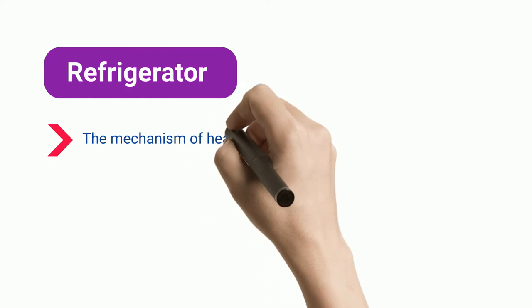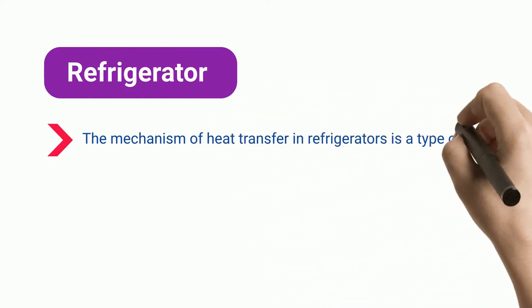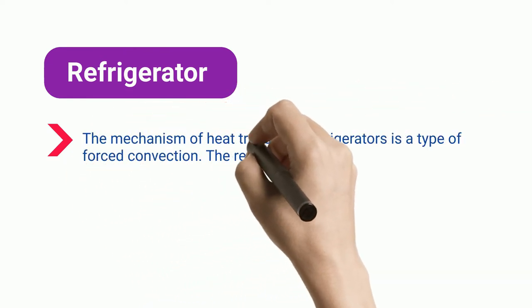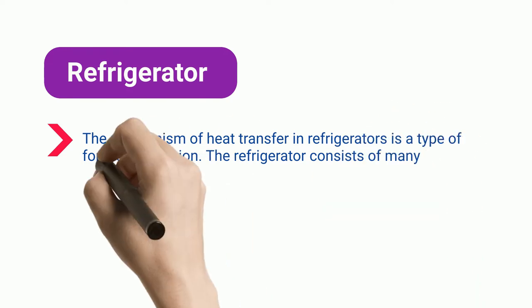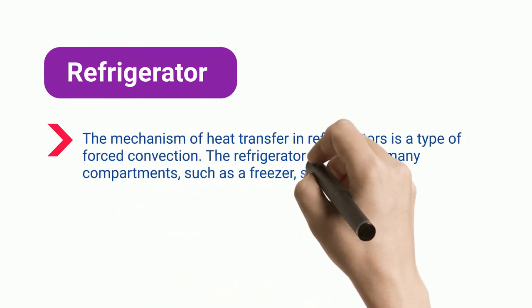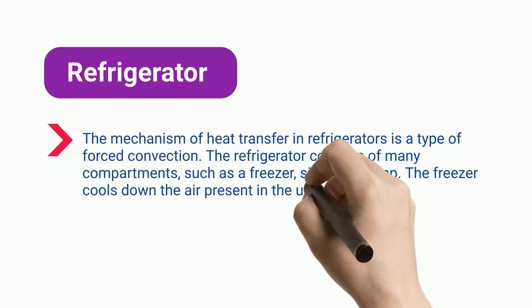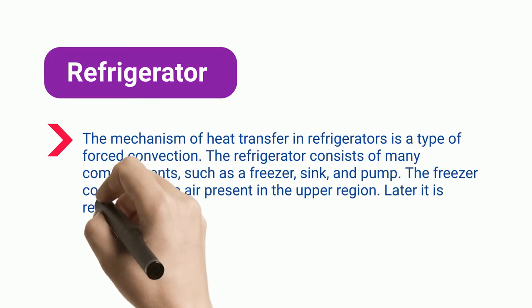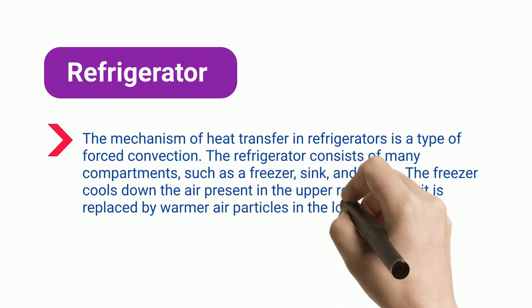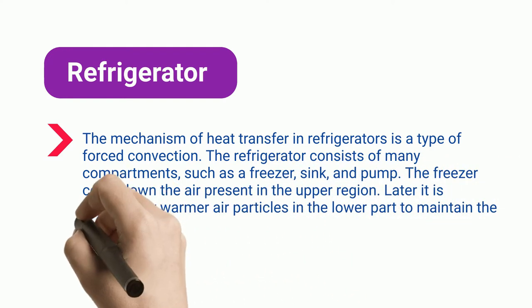Refrigerator: The mechanism of heat transfer in refrigerators is a type of forced convection. The refrigerator consists of many compartments, such as a freezer, sink, and pump. The freezer cools down the air present in the upper region. Later it is replaced by warmer air particles in the lower part to maintain the refrigerator's temperature.